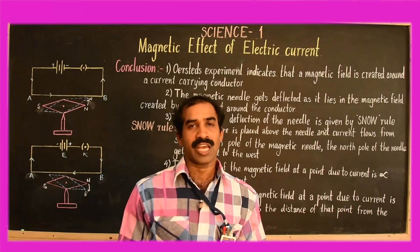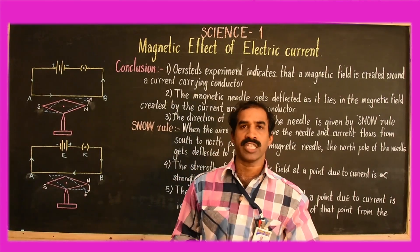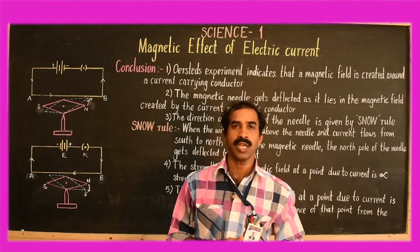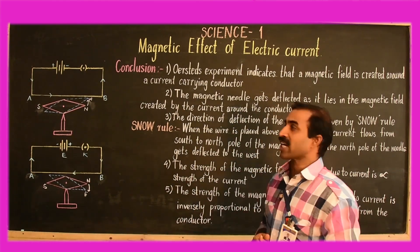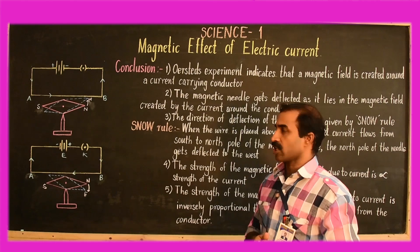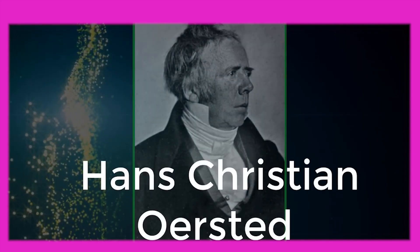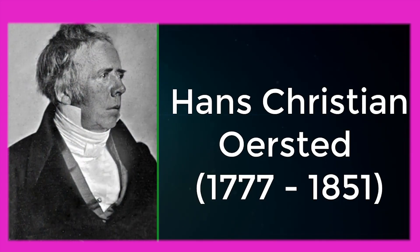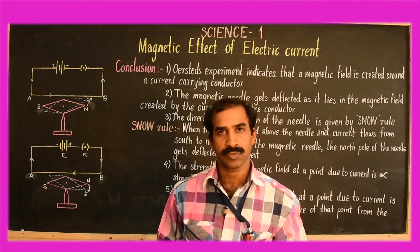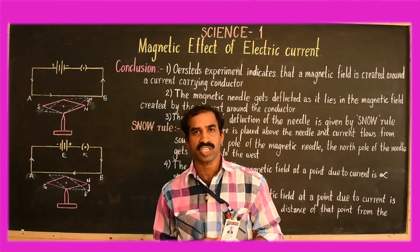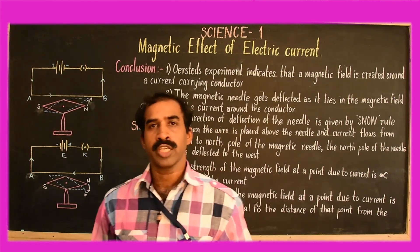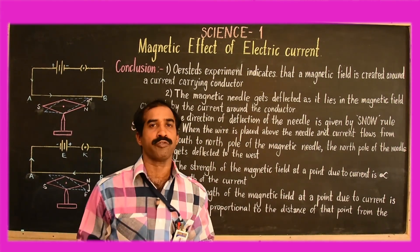Welcome to the next session of Alfo e-learning, to make learning simple and more interesting. Today we shall discuss about the magnetic effect of electric current. Hans Christian Oersted, a Danish physicist who lived between 1777 to 1851, was one of the most leading scientists of the 19th century who played a vital role in introducing the concept of electromagnetism.